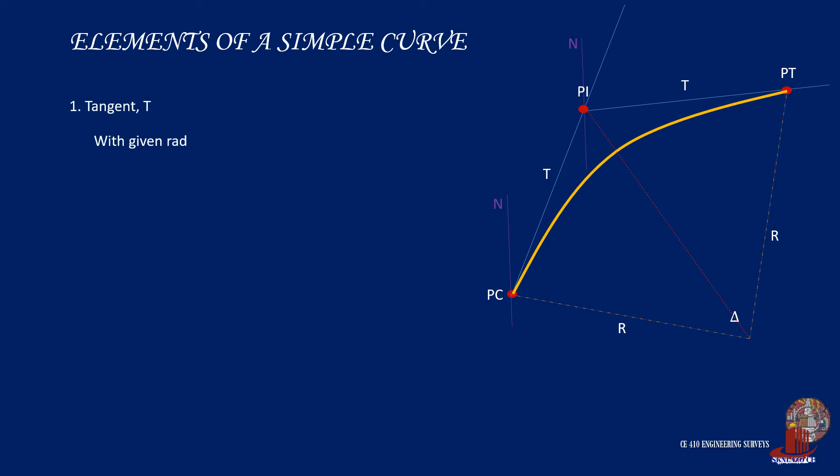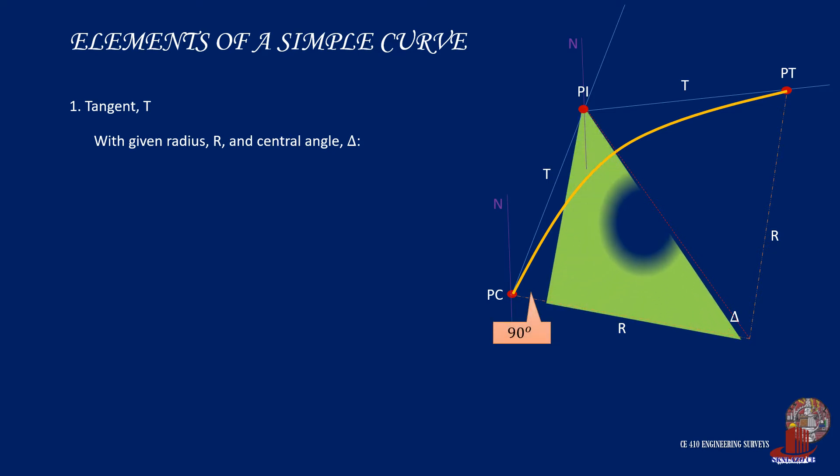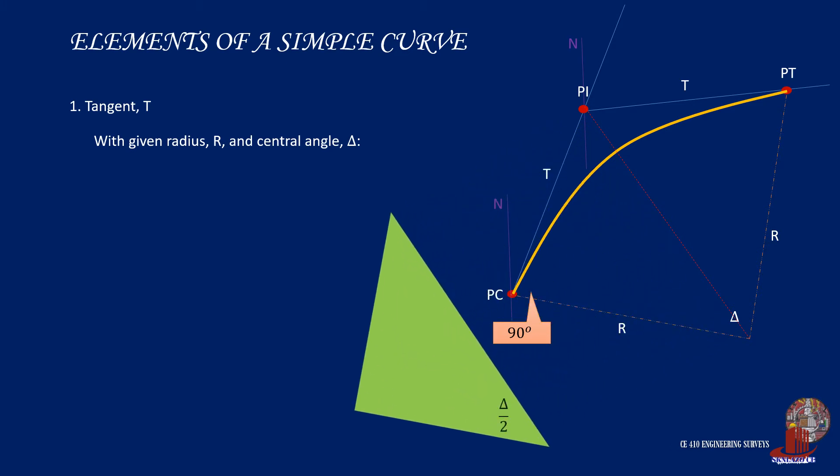First off is tangent T. With the radius and central angle already given, we can focus on the triangle formed by PC, PI, and the center of the curve point O. The radius will always be perpendicular to any point of the curve so we can generate a right triangle with a side as R and the other side taken as T. The angle will be bisected as well. By trigonometric functions, we can say that the tangent of half of delta is tangent T all over R, so by simply cross-multiplying, T is then derived as the radius multiplied by the tangent of half of angle delta.